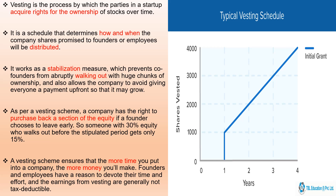The cliff period means that in the first year, if anyone walks out before the first year is finished, they will get zero money. This is because the company in its first year is very sensitive and needs all the support it can get, so to discourage early exits it is called the cliff period. The standard vesting schedule works over four years — 48 months — and every month you receive 1/48th of your equity shares.